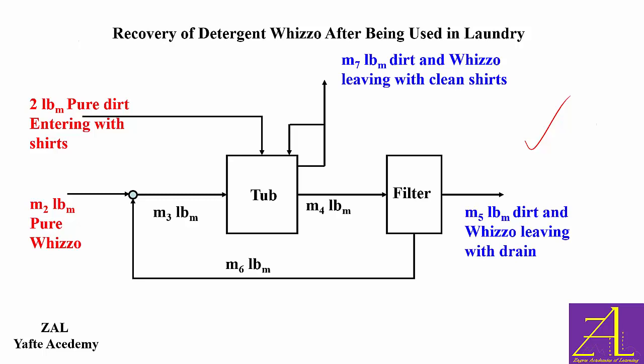Based on the main flowchart, we need to decide what systems should be selected in order to do DOF analysis, then write the balance equations, and finally solve the problem. The laundry problem is asking for the amount of pure WISO, which is m2, and the composition of the recycled stream, stream 6.